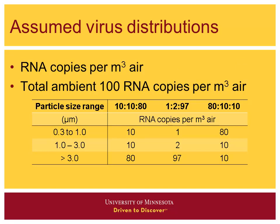Our virus size distributions have a big role in the results. The three distributions we used are: 10-10-80, meaning 10 RNA copies/m³ in the 0.3–1 micron range, 10 copies/m³ in the 1–3 micron range, and 80 copies/m³ greater than 3 microns. A distribution more fitting Carmen and Monsi's work was 1-2-97. And some folks said viruses are really small and numerous at that small size, so we also tried 80-10-10. All of those are inputs in the model and can be changed.